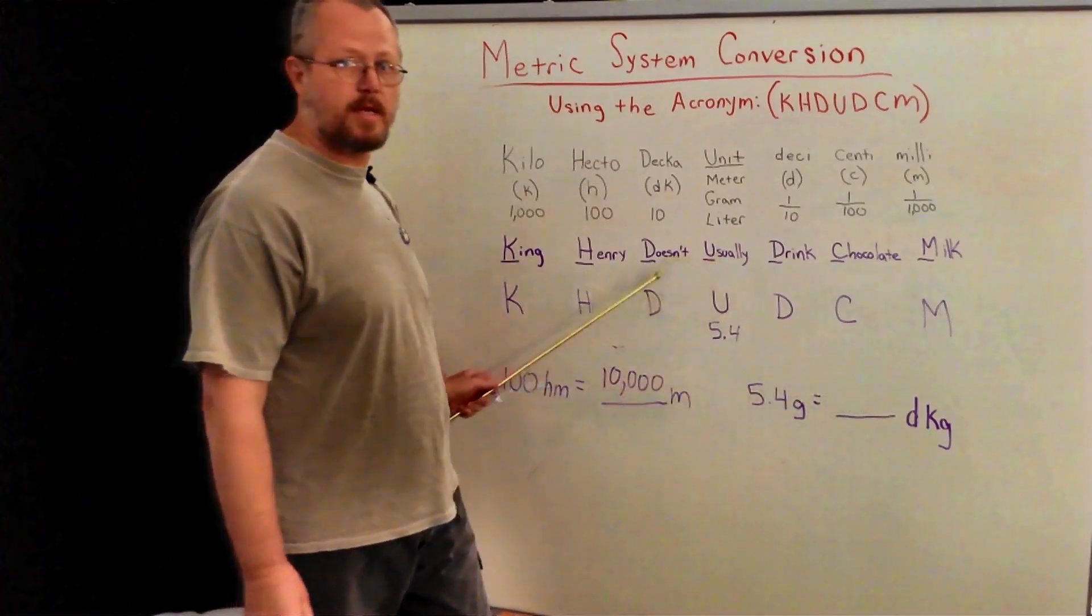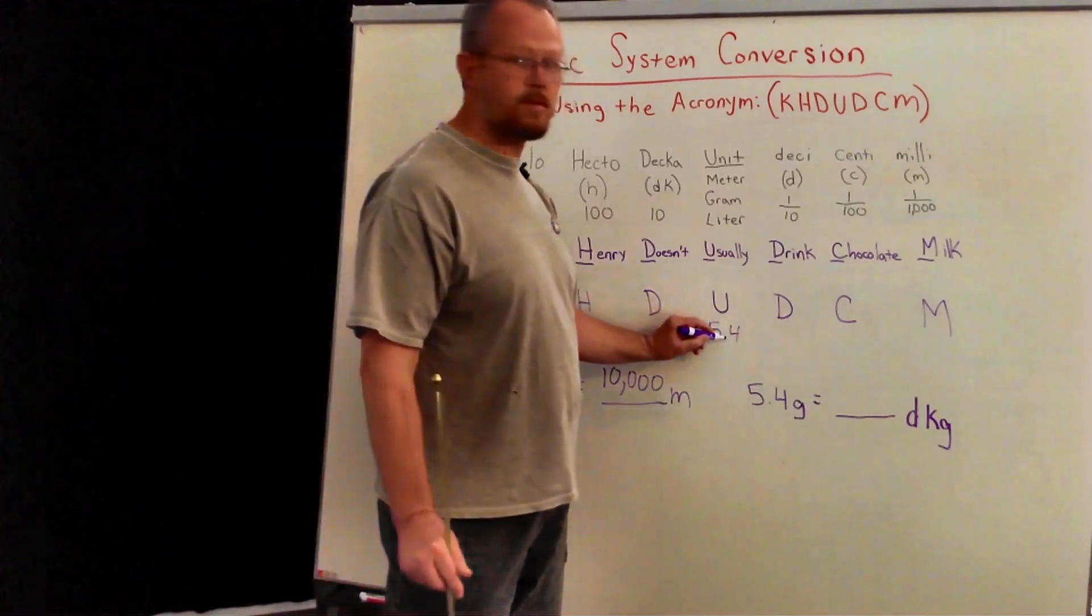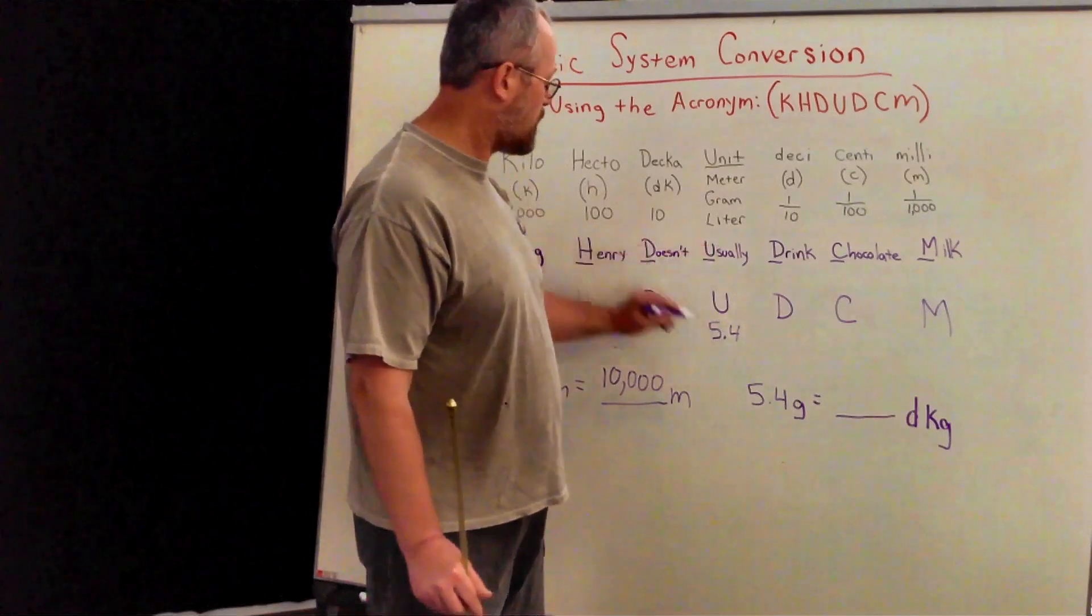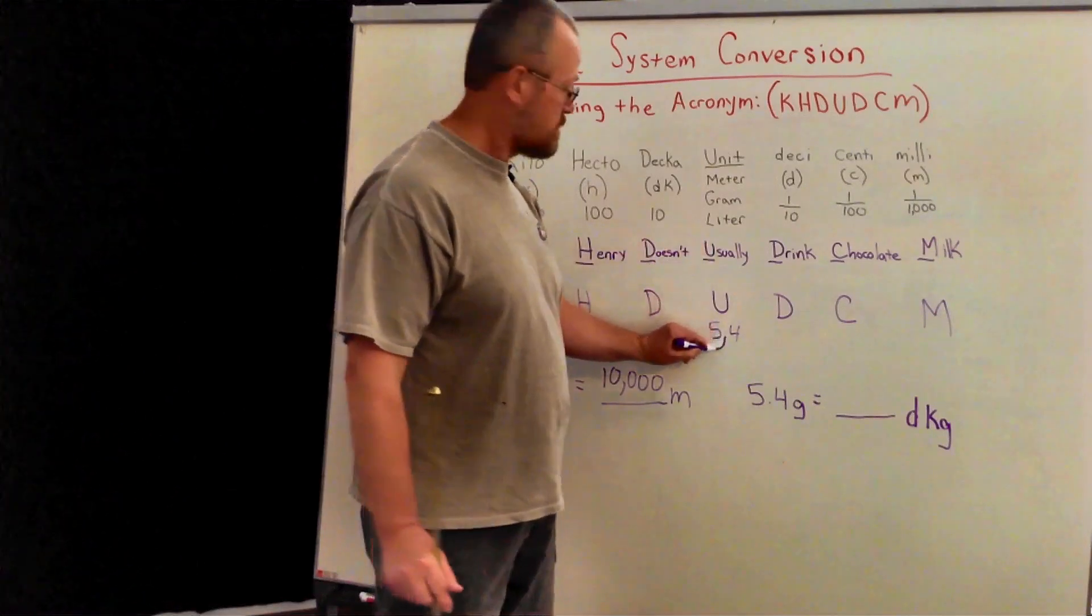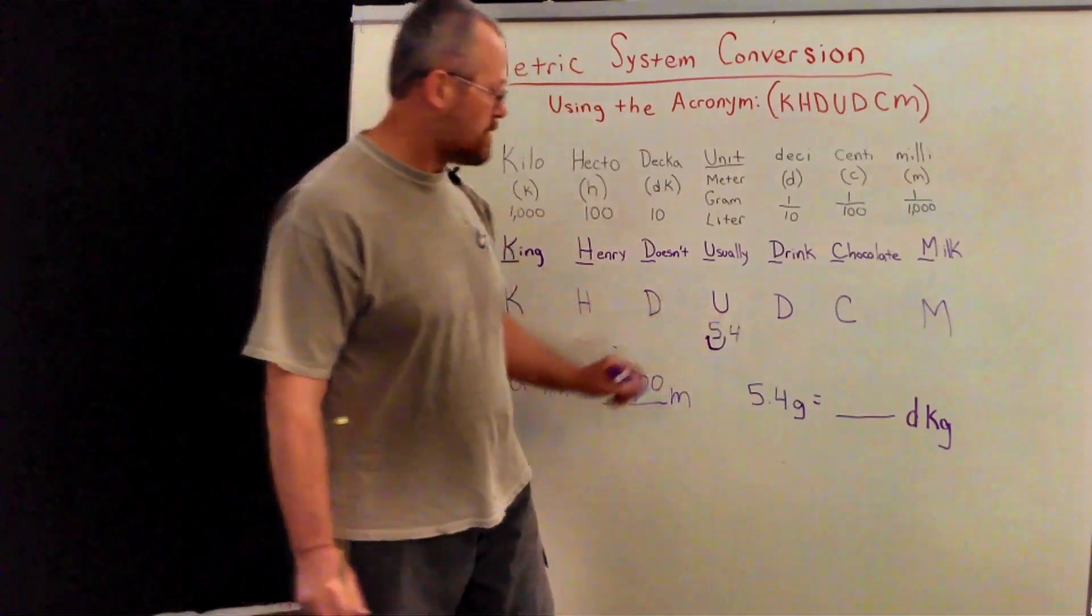So all we do is take that decimal point, which is really important. And since we're only going one spot, we'll go from one spot here, and we'll end up with 0.54 decagrams.